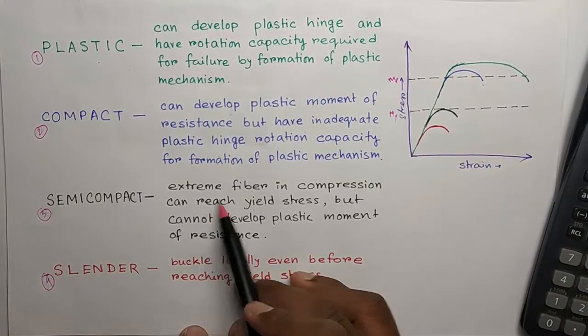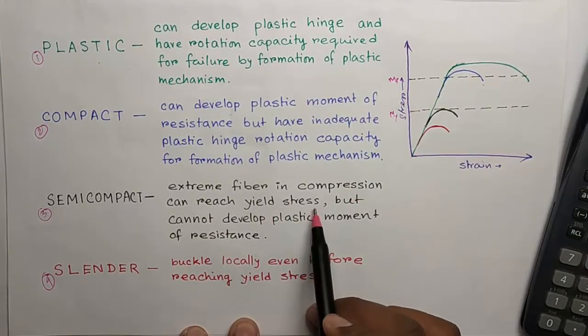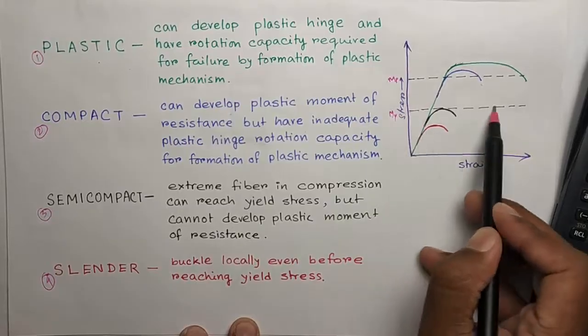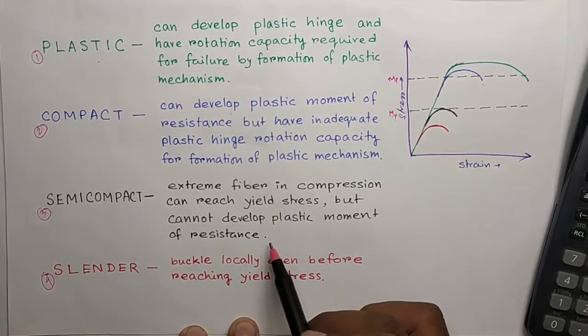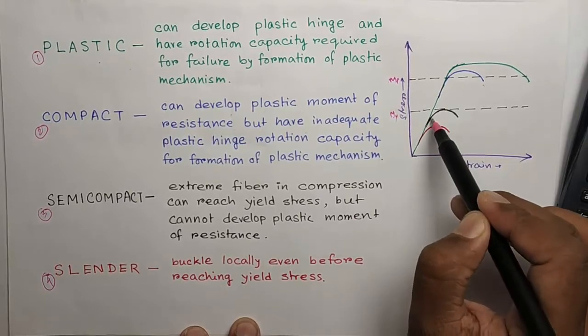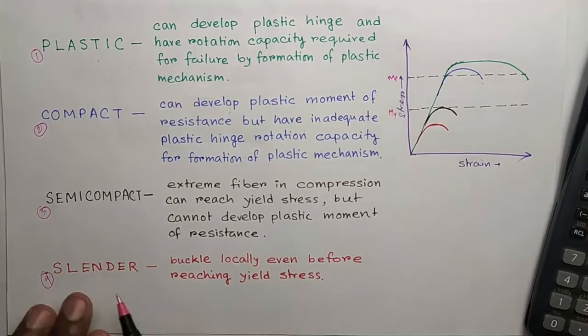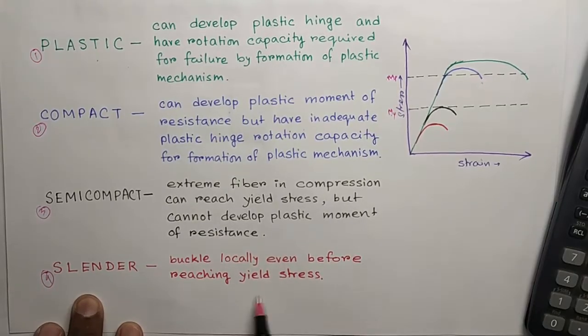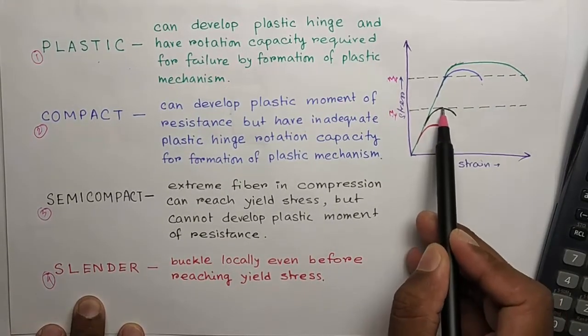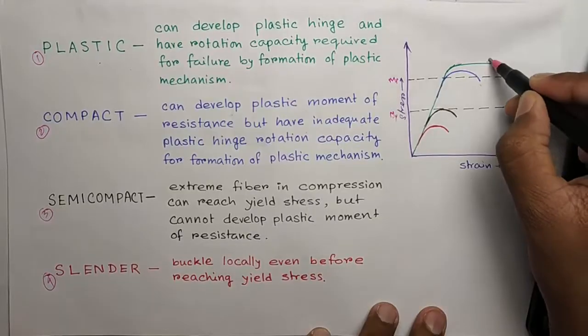Now comes semi-compact. The extreme fiber in compression can reach yield stress. You see this is the yield stress line. So it can reach yield stress but cannot develop plastic moment of resistance, just reaches the yield stress and then fails. And then comes slender. It buckles locally even before reaching the yield stress. See, it can't reach the yield stress.